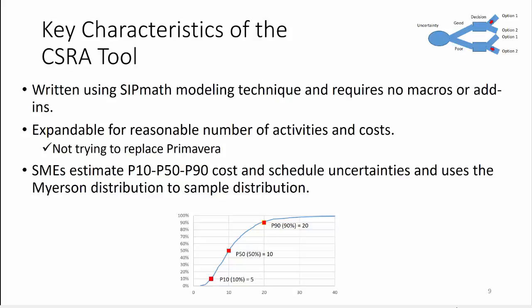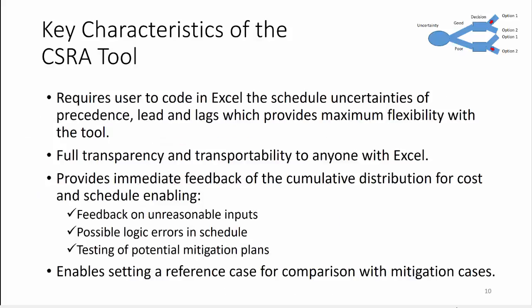What this means is you can estimate a P10, 50, and 90 — any three numbers — and the Meyerson distribution will fit them, as shown in this S-curve. The tool requires a user to code in Excel the schedule uncertainties of the precedents, leads, and lags, but this provides maximum flexibility. The tool has full transparency and transportability with anyone who has Excel, because it doesn't require any special software. It provides immediate feedback of the cumulative distribution for cost and schedule, enabling feedback on unreasonable inputs — so if you put in an extra zero somewhere, or have logic errors in the schedule, that would show up right away. You can also test potential mitigation plans on the spot, with no need to wait overnight to generate graphs.